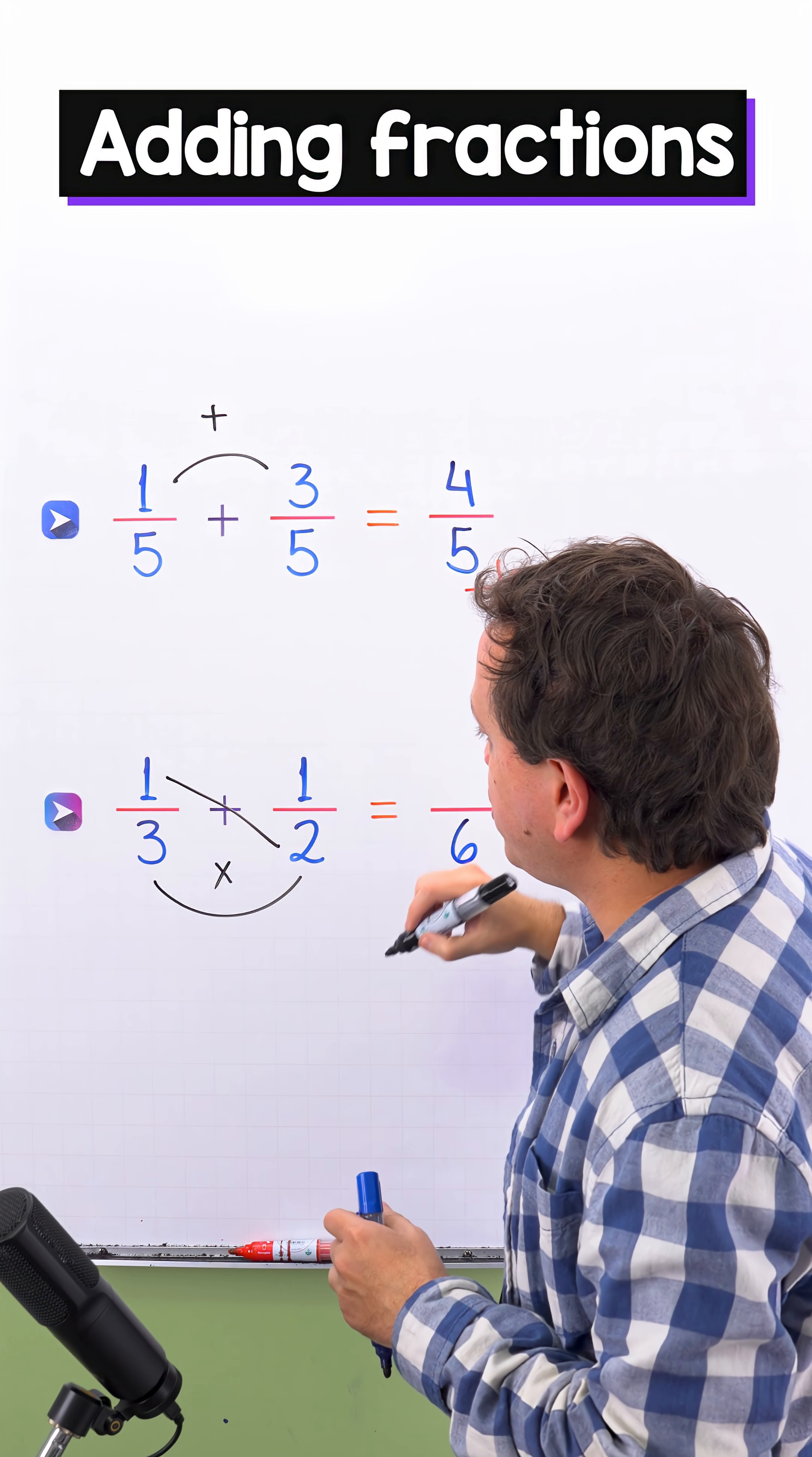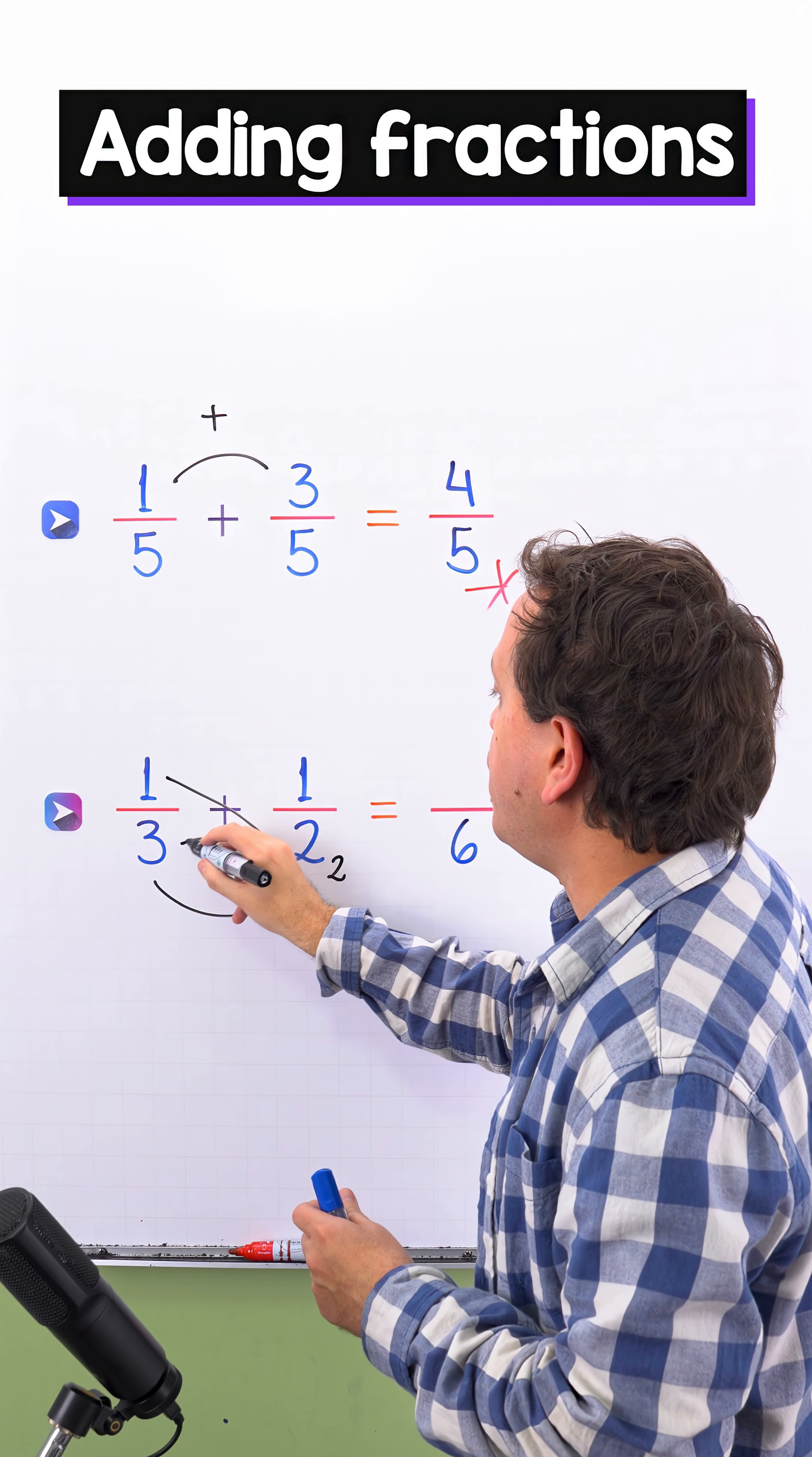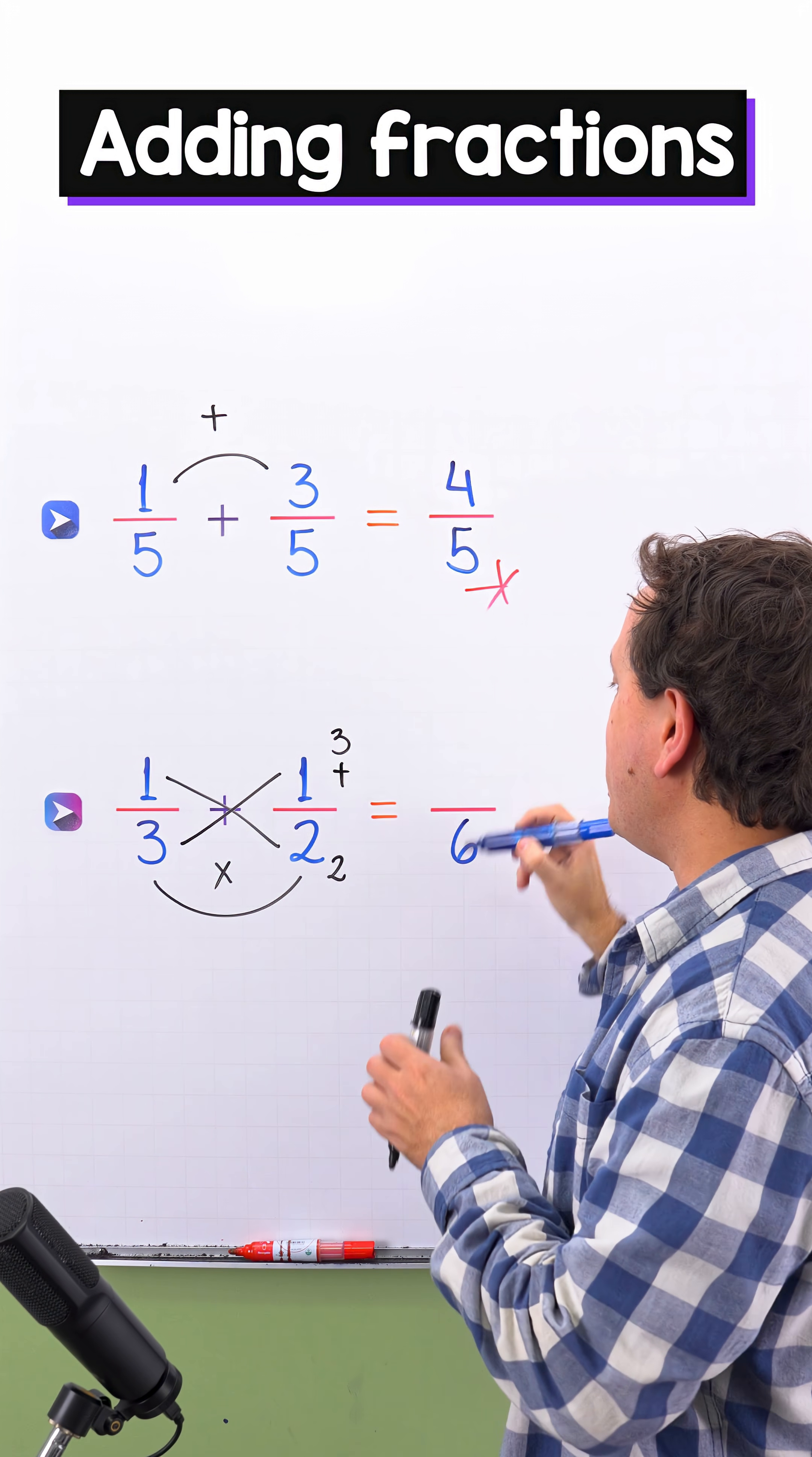On this side, we have one times two, and one times two equals two. On the other side, three times one, and three times one equals three. Then, three plus two give us five.